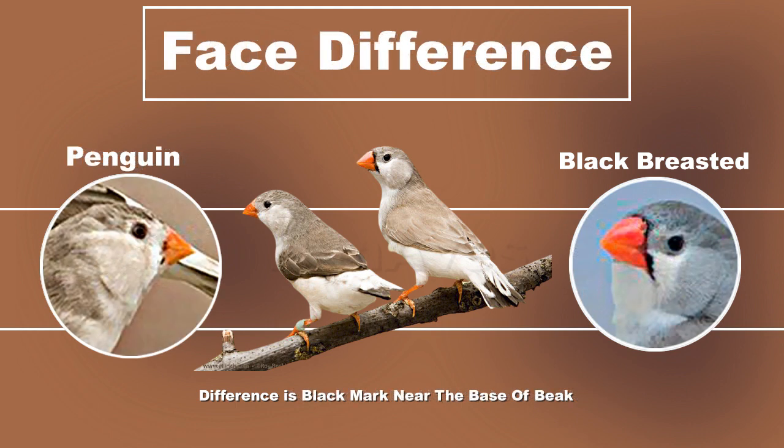Now we will identify both by their face markings near the base of their beak. In the first picture you can observe the little frosted marks — in some individuals it might be missing. In the second picture you can observe the marks near the base of the beak in the black-breasted mutation. So these were the simple points to differentiate between both.